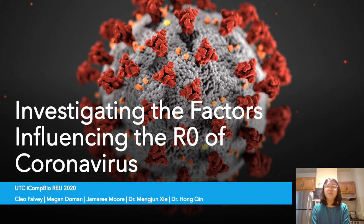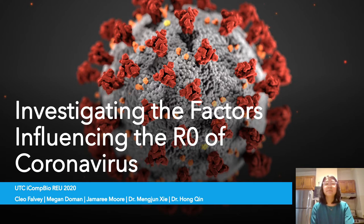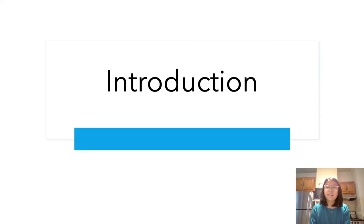Hi, my name is Cleo. I'm a senior at the University of Massachusetts Boston and today I'm going to be talking about my summer research project at the iComp Bio REU at the University of Tennessee Chattanooga, working with Dr. Mengshun Xie and Dr. Hong Chen. My research project is about factors that control the spread of coronavirus disease. Before I start talking about that, I'm going to give a little background that I think is important to know.